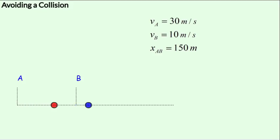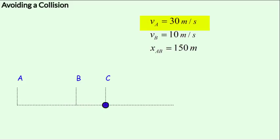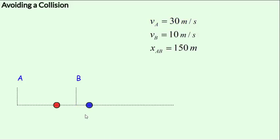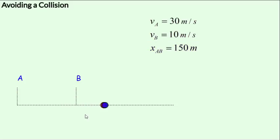A red ball A moves to the right with a uniform velocity of 30 meters per second. Simultaneously, a blue ball, which is 150 meters away from the red ball initially, also moves to the right with a uniform velocity of 10 meters per second.